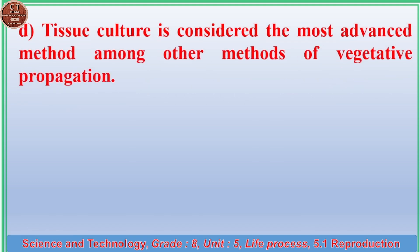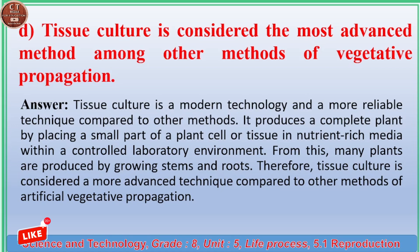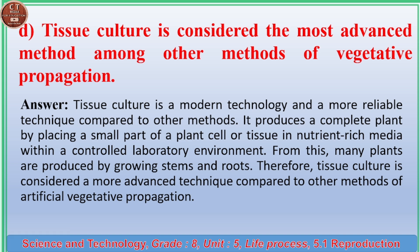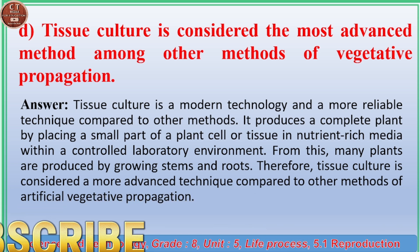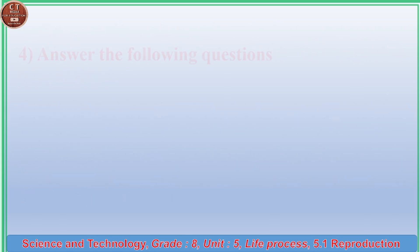(d) Tissue culture is considered the most advanced method among other methods of vegetative propagation. Answer: Tissue culture is a modern technology and a more reliable technique. It produces a complete plant by placing a small part of a plant cell or tissue in nutrient-rich media within a controlled laboratory environment. Many plants are produced by growing stems and roots, making tissue culture the most advanced method of artificial vegetative propagation.